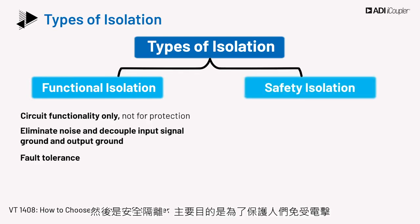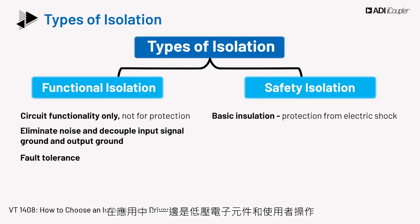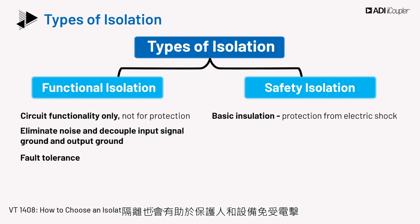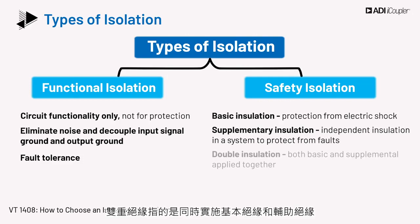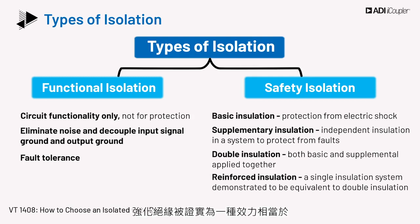Then there is safety isolation. This is required primarily to protect people from electric shock. There is low voltage electronics and user operation on one side and higher power levels at the switches. Isolation also helps protect people and equipment from electric shock. Apart from basic insulation, supplementary insulation may be present in a system to protect against faults. There is double insulation, which is both basic and supplemental applied together. Reinforced insulation is a single insulation system, demonstrated to be equivalent to double insulation.